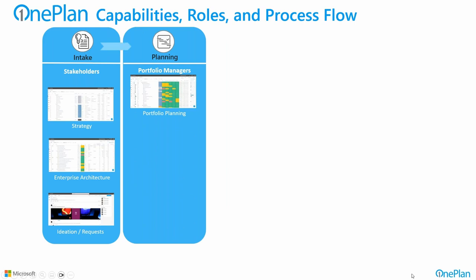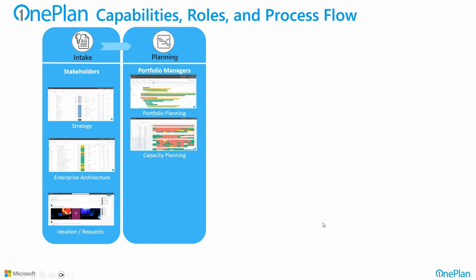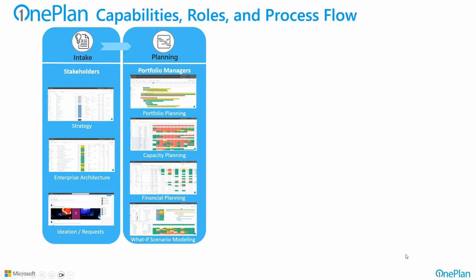For selecting the work to do, OnePlan provides full portfolio visibility with active tracking, KPIs, metrics, and measurements across all portfolios of projects and initiatives. There are Kanban views of portfolios as well as roadmap views for product and delivery-oriented teams. Capacity planning shows resource demand versus ability to fulfill, and financial planning tracks finances on a time-phased basis. What-if scenario modeling enables evaluating alternatives as situations change.